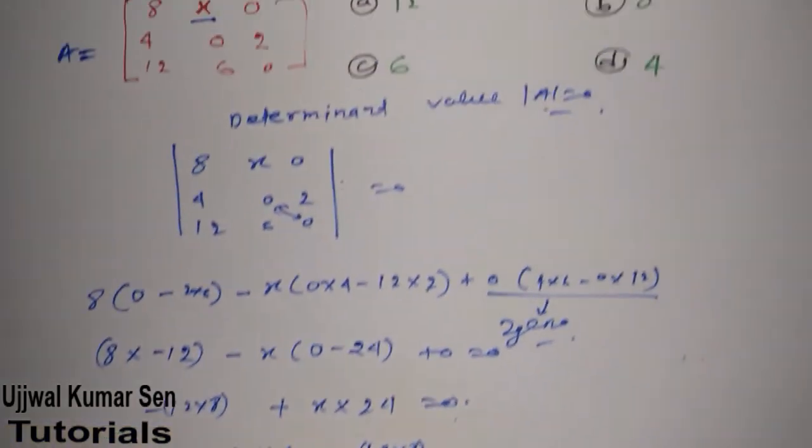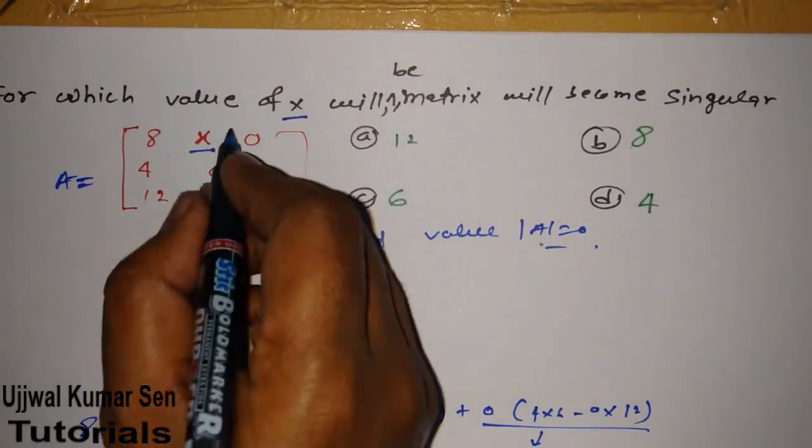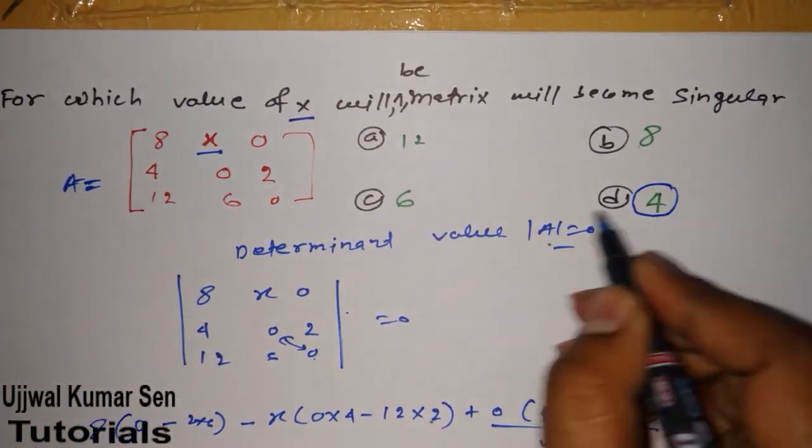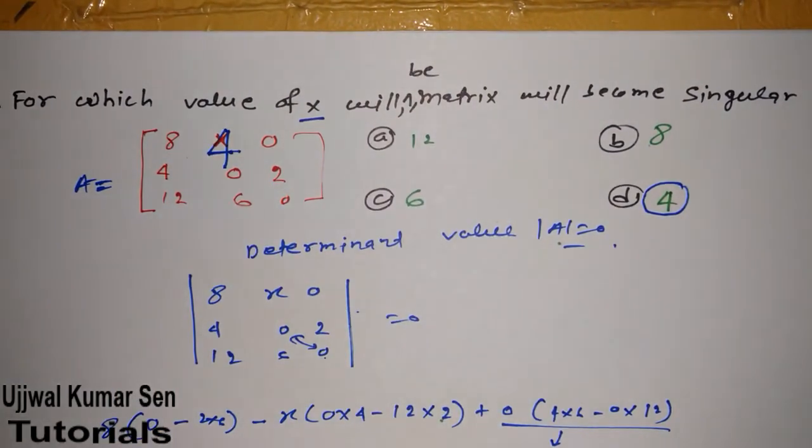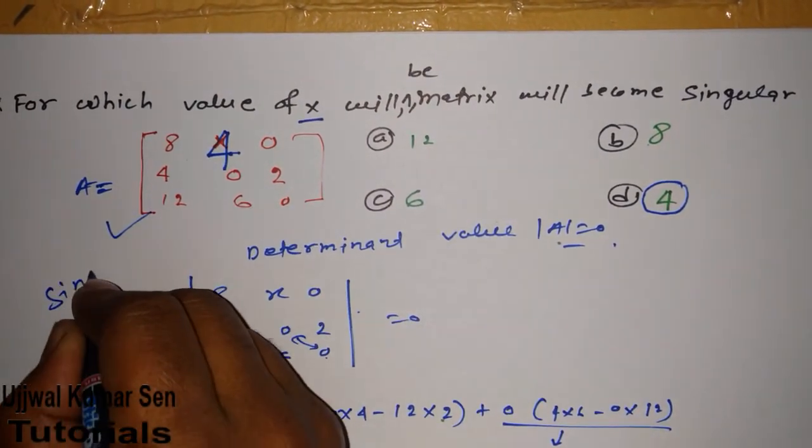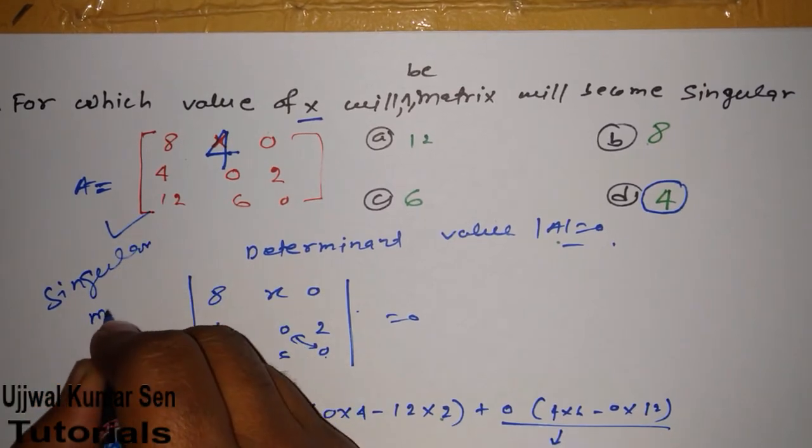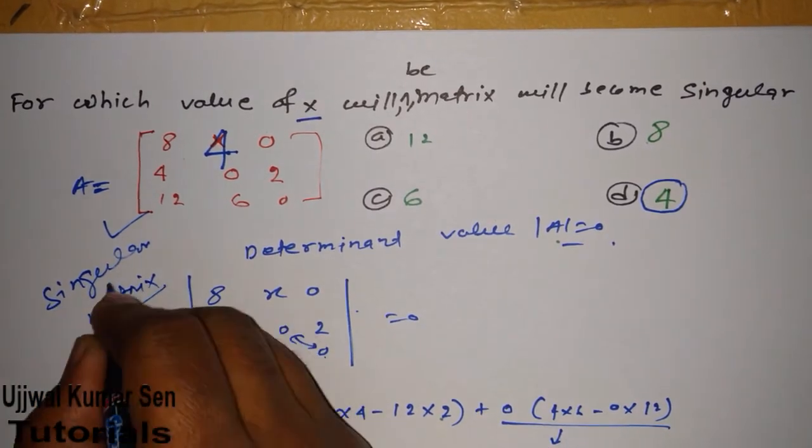So 2, 2, 4s are 8. So x is equal to 4. That means when we put 4 in the place of x, then this matrix is known as singular matrix.